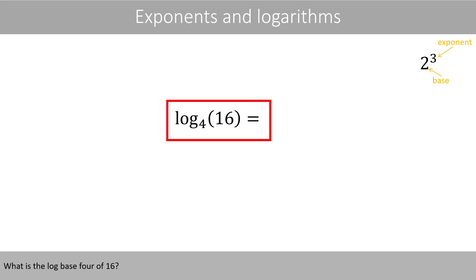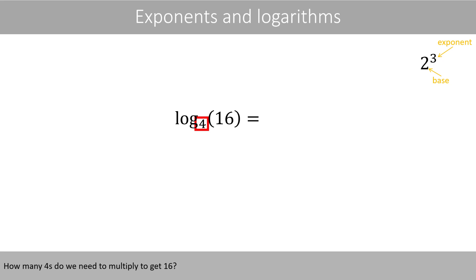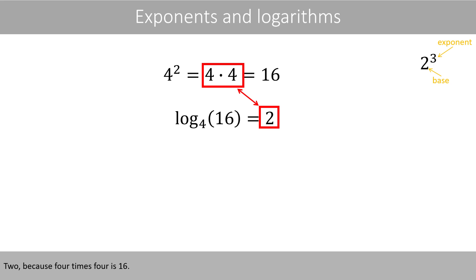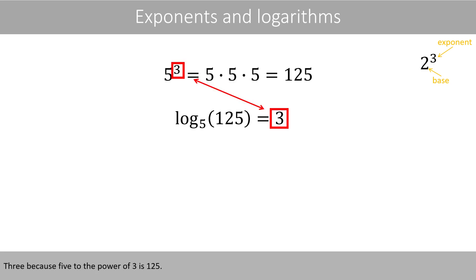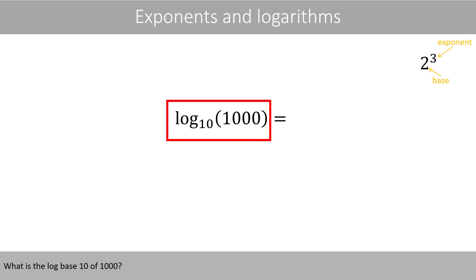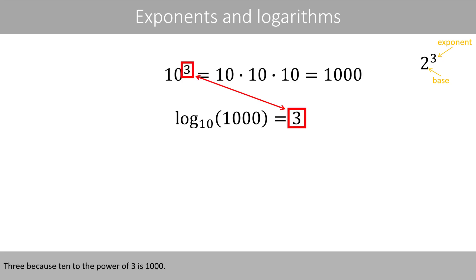What is the log base 4 of 16? How many 4s do we need to multiply to get 16? 2, because 4 times 4 is 16. What is the log base 5 of 125? How many 5s do we need to multiply to get 125? 3, because 5 to the power of 3 is 125. What is the log base 10 of 1000? 3, because 10 to the power of 3 is 1000.